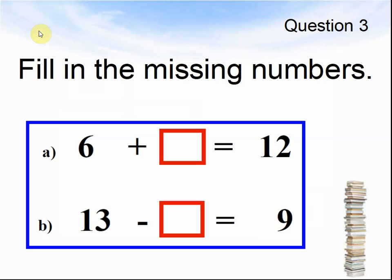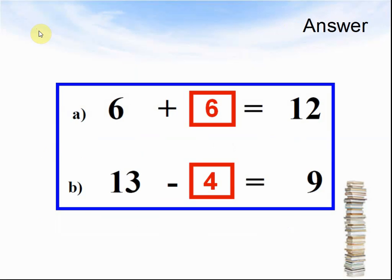Question 3. Fill in the missing numbers. A: 6 plus something equals 12. B: 13 take away something equals 9. Pause the video and solve the question. The answers: A — 6 plus 6 equals 12. B — 13 take away 4 equals 9.